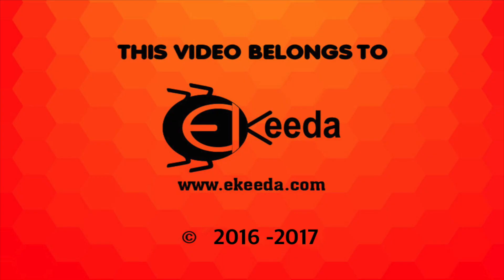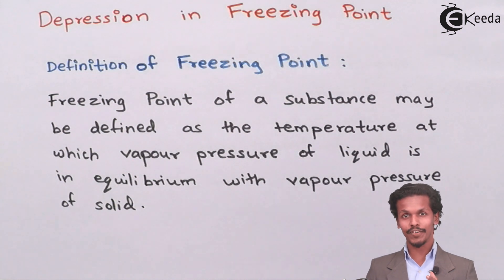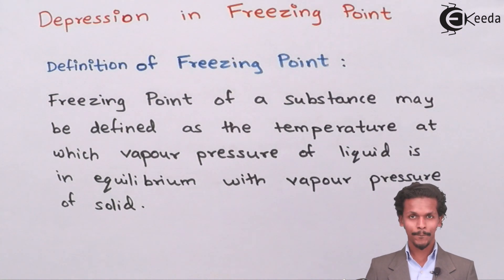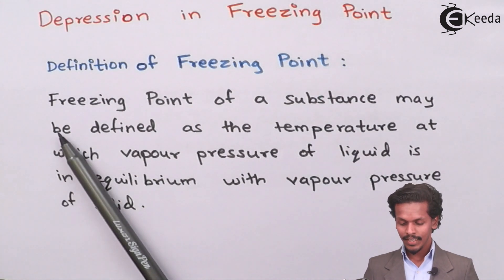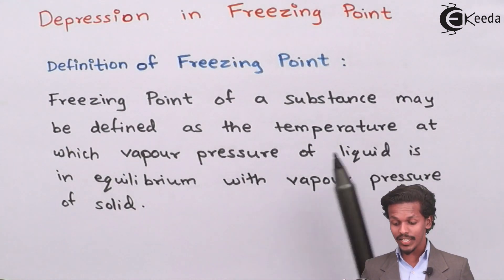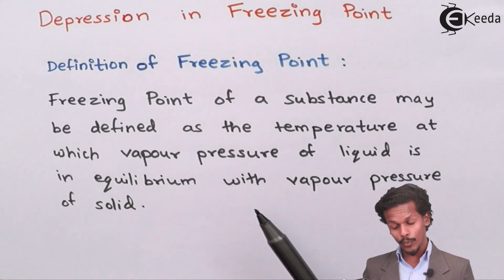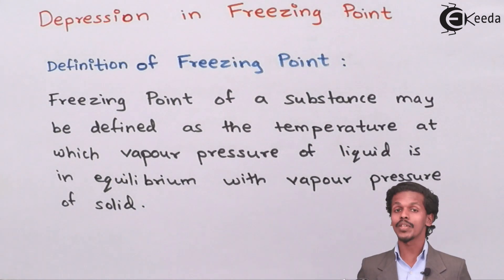What is the depression in freezing point? Before knowing that, we should first know what is freezing point. So according to the definition, the freezing point of a substance may be defined as the temperature at which the vapor pressure of the liquid is in equilibrium with the vapor pressure of the solid.